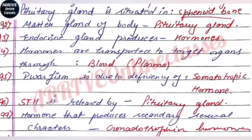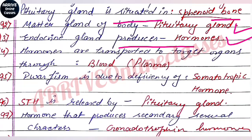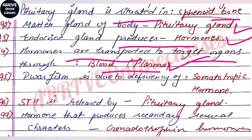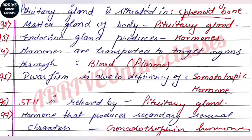The pituitary gland is situated in the sella turcica cavity of the sphenoid bone of the skeletal system. The pituitary gland is called the master gland. Endocrine glands produce hormones, which are transported to the target organ through blood plasma.